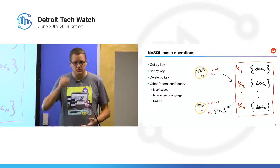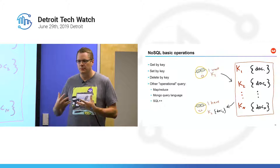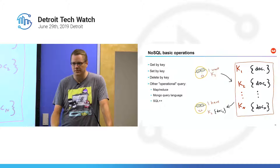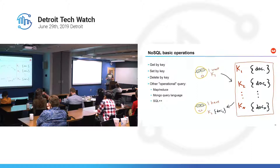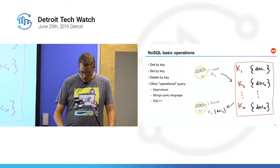With NoSQL, the basic operations — get, update, delete by key — are called that because you don't write SQL to do them. Typically a NoSQL database will also have another way to do operational queries when you don't know the key. For example, looking up all flights leaving from Chicago. Some approaches include map-reduce, MongoDB's proprietary JavaScript query language, and SQL++ — yes, you can use SQL to query NoSQL data. There are lots of options for operational queries.